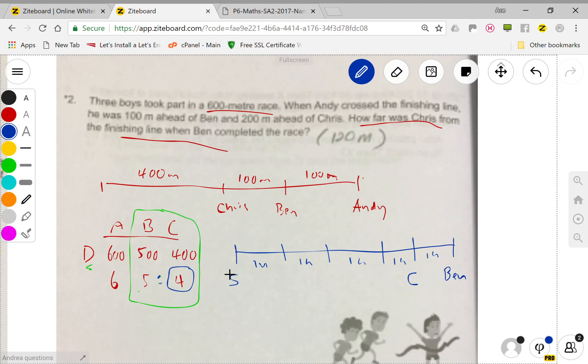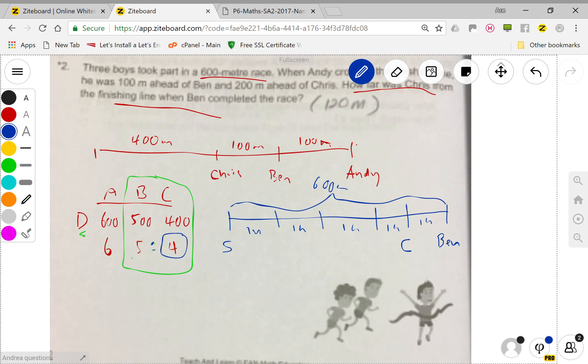You have five units. If we take 600 divided by 5, we get 120, so one unit is 120. So when Ben is here, C is 120 meters away.